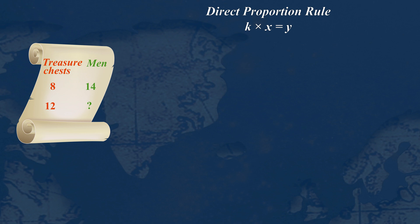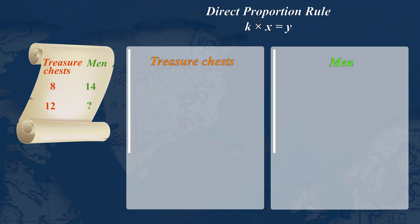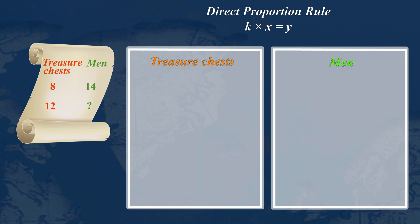Let's do the same question in a more formal way using the rule for direct proportion. The answer has two parts because both quantities — treasure chests and men — increase at the same rate.